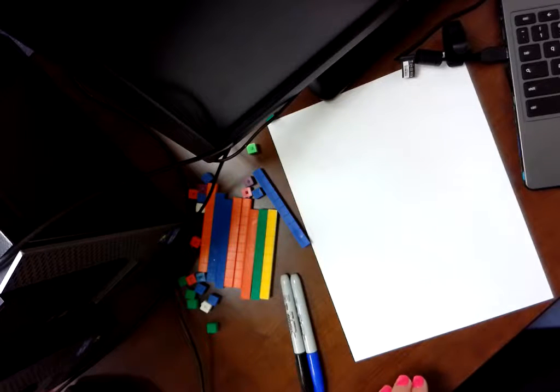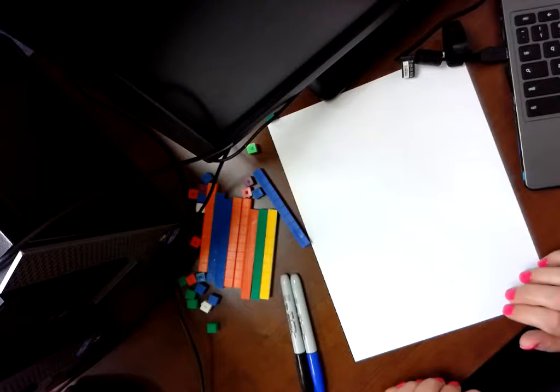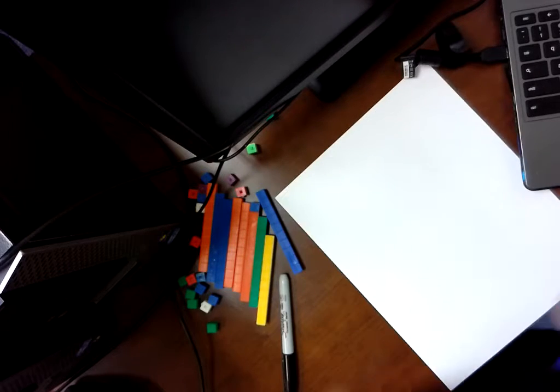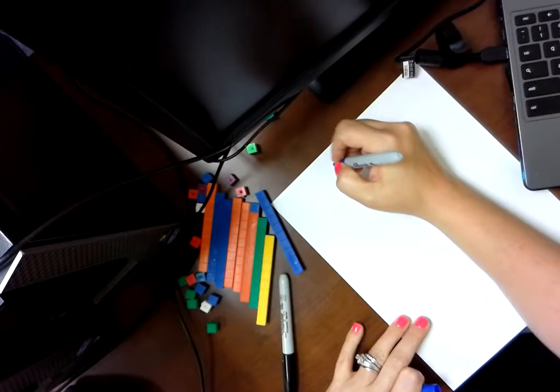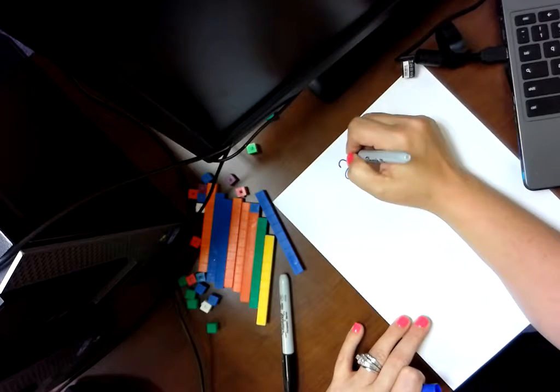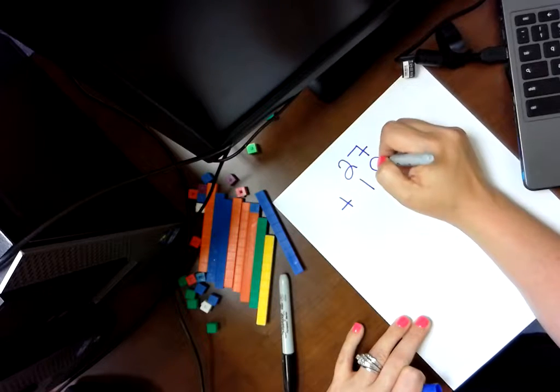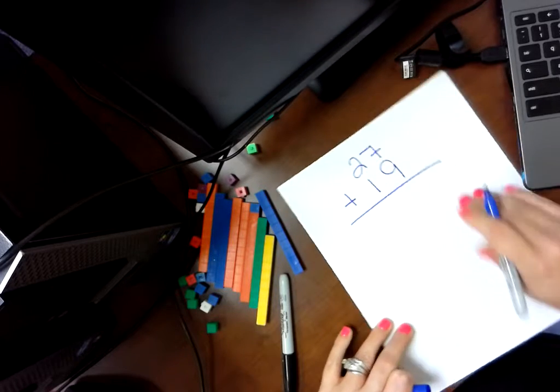Today we're going to talk about how to add with regrouping using base 10 blocks. So our problem we're going to write is 27 plus 19.